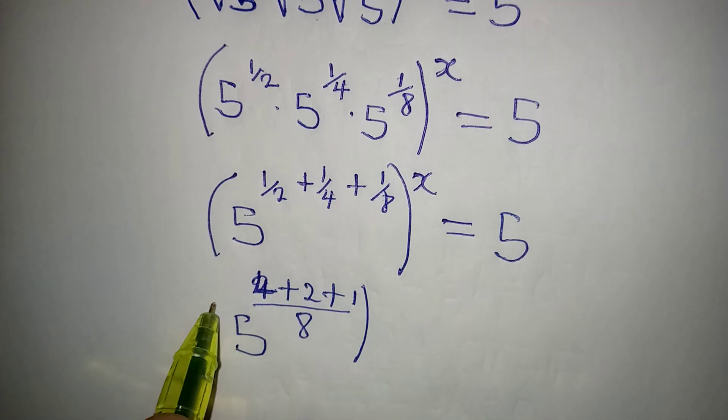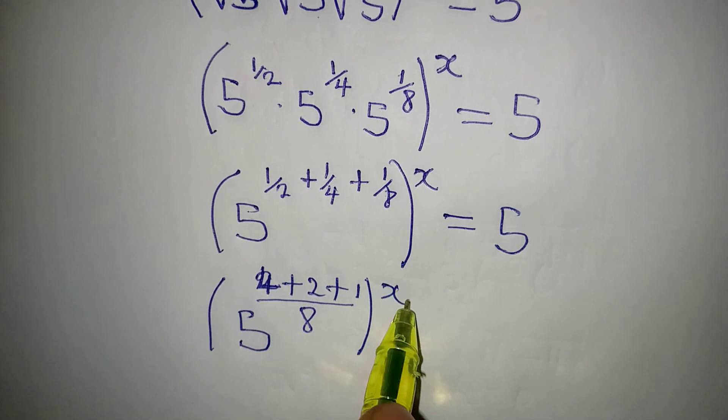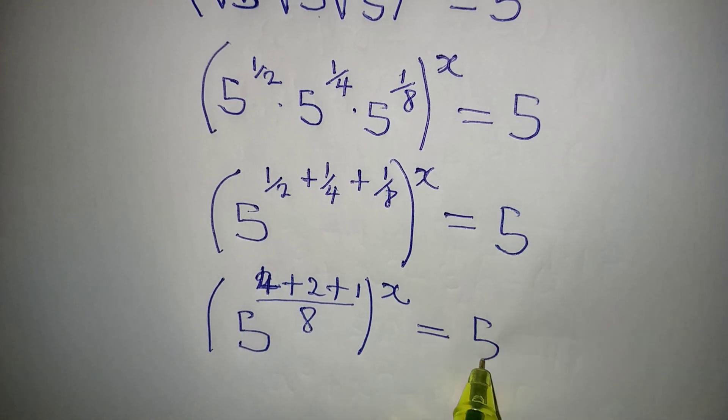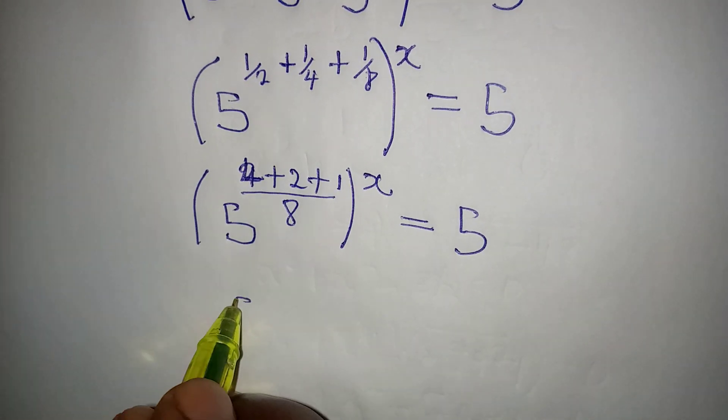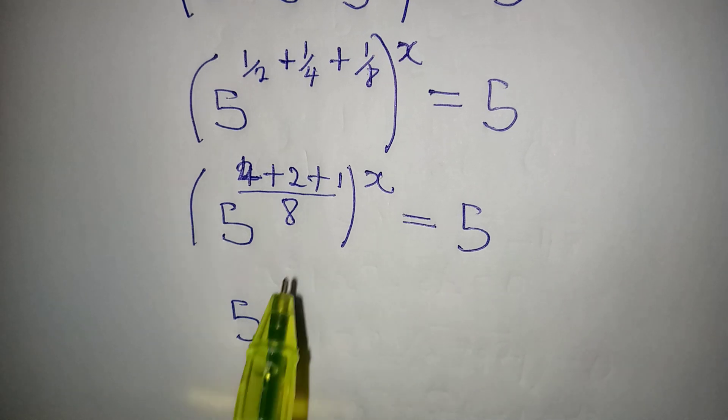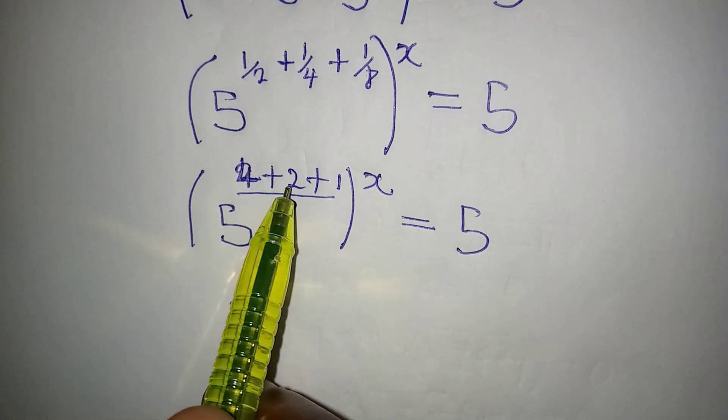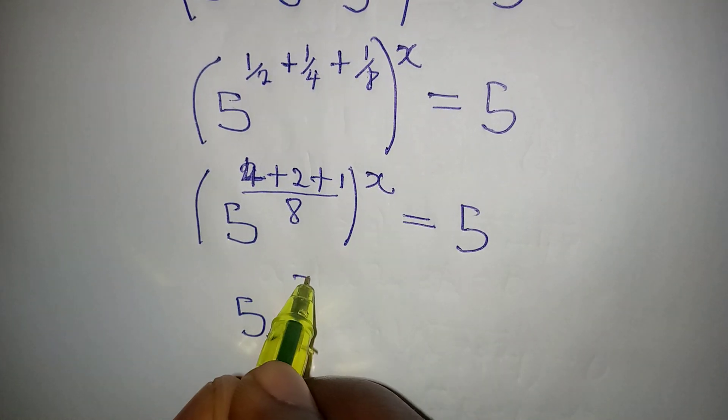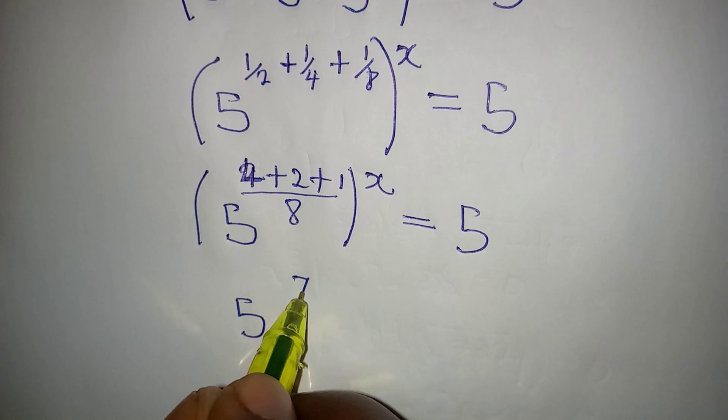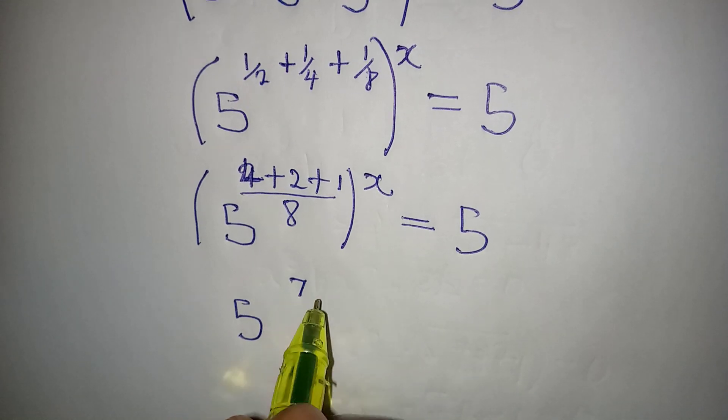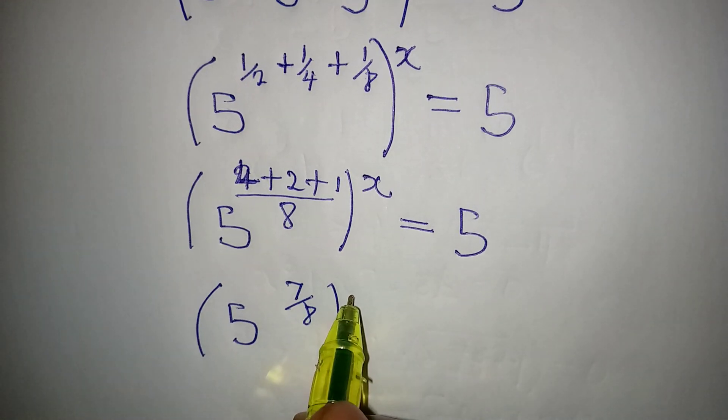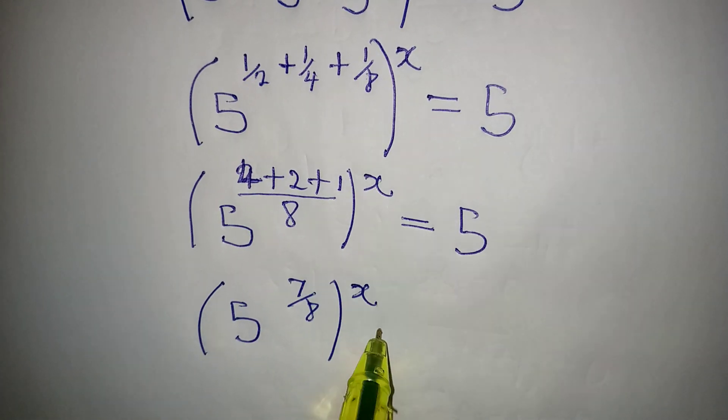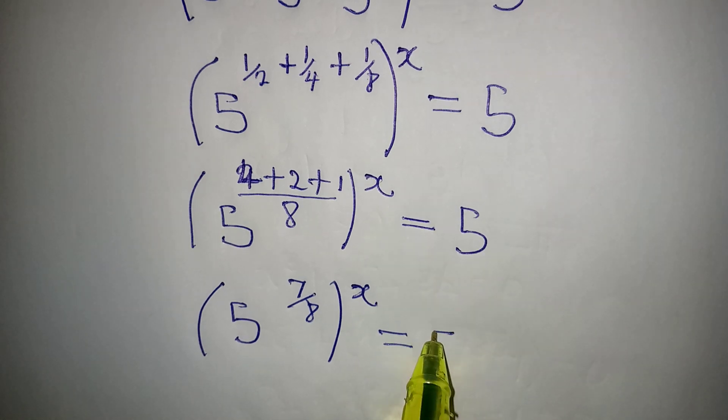And then we still have this to the power of x which is equal to, the power of 4 plus 2 plus 1 is going to give 7 and this 7 will be over 8. But remember that we still have this power of x which is going to be equal to 5.